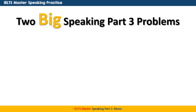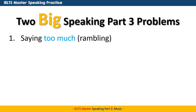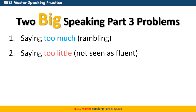So let's talk about two big Speaking Part 3 problems. Number one is saying too much — rambling, going on and on and on. The reason this is a problem is because it makes it very easy for you to make mistakes, or to get stuck or to have a logic problem where you don't know where to continue next. Number two is saying too little, and this is a problem because you're not seen as fluent if you can only say one or two sentences. Maybe you have a great idea, but if you can't talk about it and expand the idea, it's not quite enough usually.